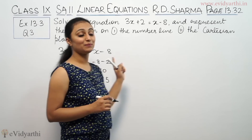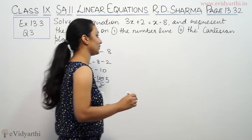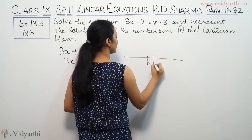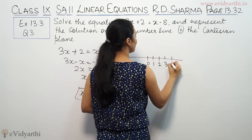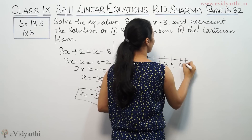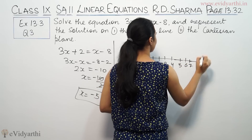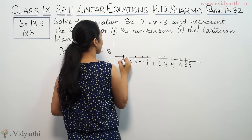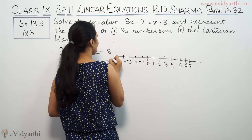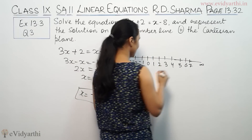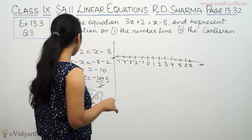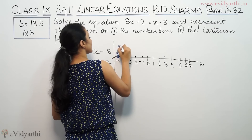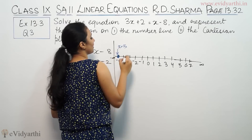This will also be represented on the number line and the Cartesian plane. For number line plotting: this is 0, 1, 2, 3, 4, 5, 6, 7 and this is minus 1, minus 2, minus 3, minus 4, minus 5. This is minus infinity and this is infinity. Now we have to plot x equals minus 5 here. So this is minus 5 — this point — this is x equals minus 5.